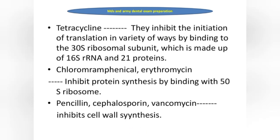Tetracycline, chloramphenicol, and erythromycin all inhibit protein synthesis. Tetracycline inhibits the initiation of translation by binding to the 30S ribosomal subunit, which is made up of 16S rRNA and 21 proteins. Chloramphenicol and erythromycin also inhibit protein synthesis but bind to the 50S ribosomal subunit.